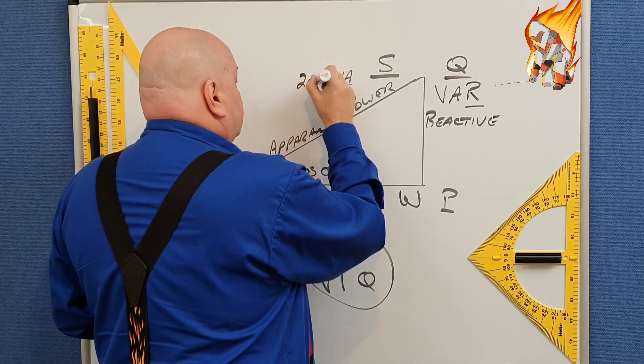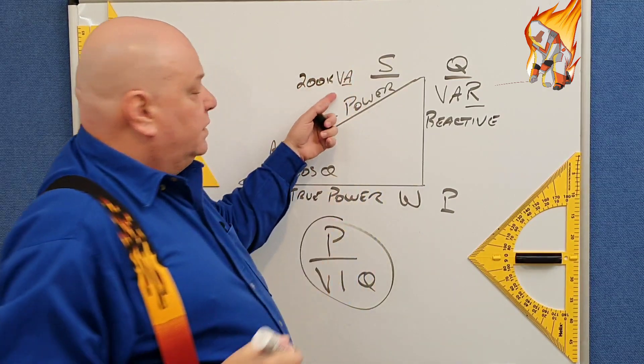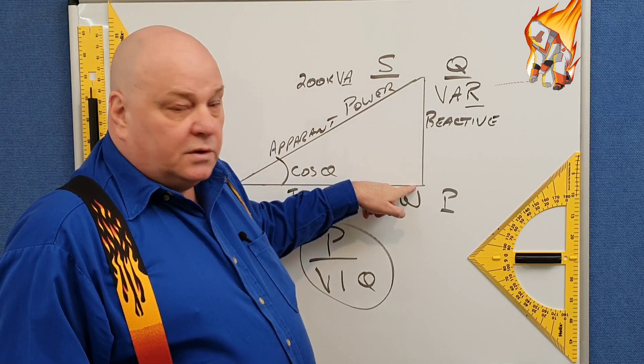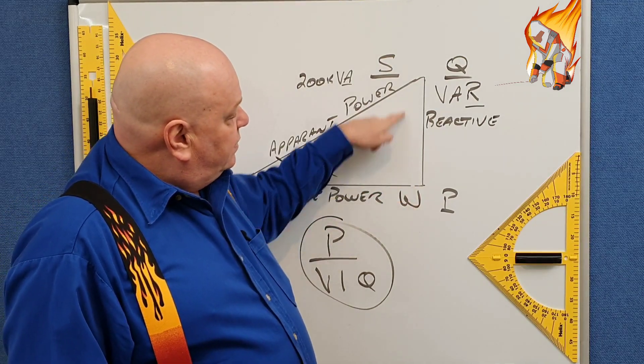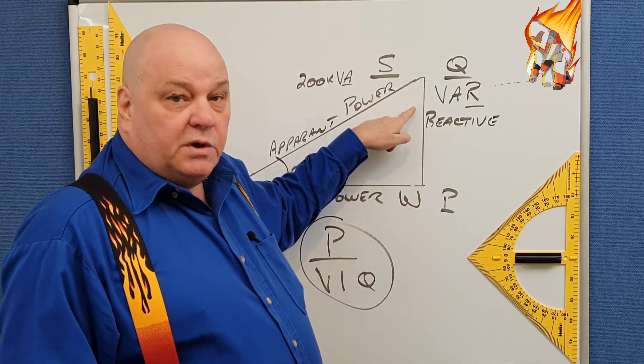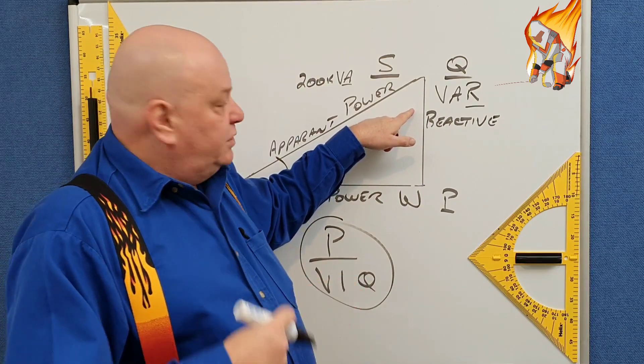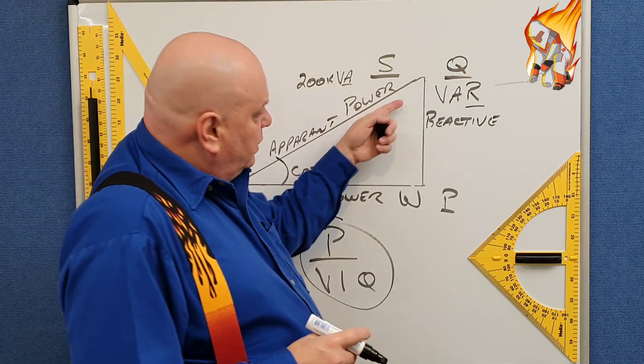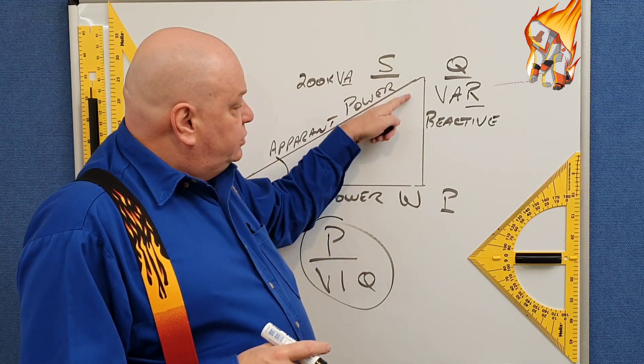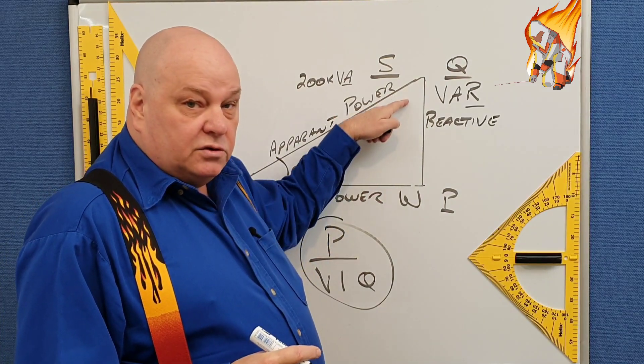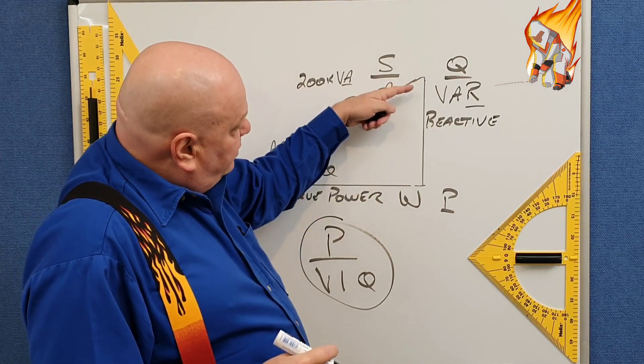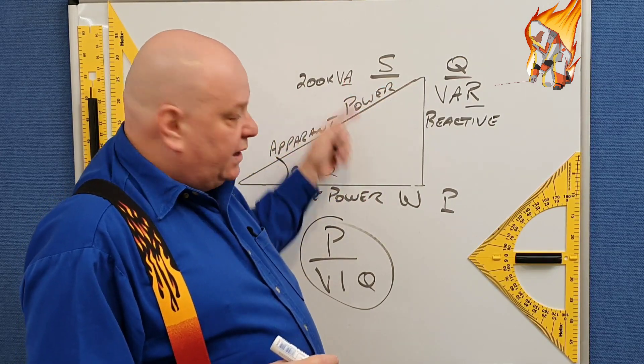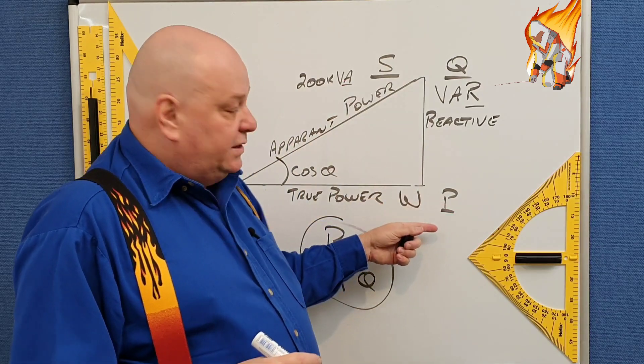So you've got 200 kVA. But it's not giving us 200 kilowatts. It's because of the power that's used up in the reactive component, which is your inductor, which is what's building the magnetic field in the machine. If we were able to reduce the amount of power used in the reactive component, we'd be able to bring that down. And so 200 kVA would provide more power down here.